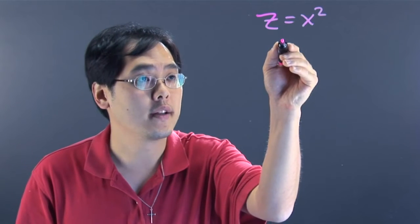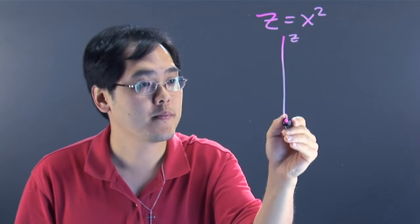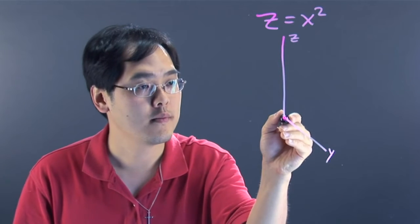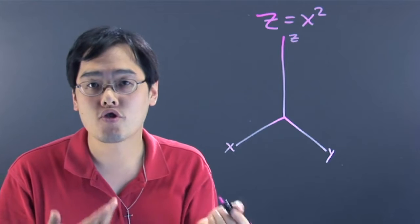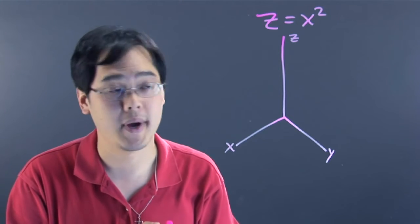So hypothetically, if this was the z-axis, this was the y-axis, and if this was the x-axis, we're going to draw a really rough sketch of a parabolic cylinder to kind of give you an idea as to what it might look like.